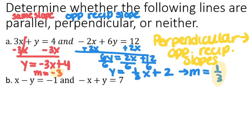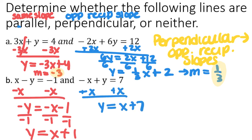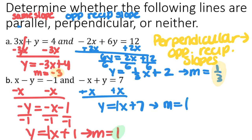For the next pair, subtract x from both sides to get negative y equals negative x minus 1, then divide by negative 1 to get y equals x plus 1. For the other equation, add x to both sides to get y equals x plus 7. The slope of the first line is 1 and the slope of the second line is also 1. Since these are the exact same slope, these lines are parallel.